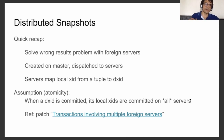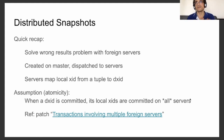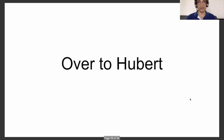To recap: distributed snapshots solve the problem of tuple visibility. The distributed transaction ID and snapshot are created on master and sent to servers along with each query statement. Foreign servers maintain a mapping between local and distributed transaction IDs for determining tuple visibility. This is based on the assumption of atomicity — when a distributed transaction ID is committed, all local transaction IDs that were part of this transaction are seen as committed by all involved foreign servers. There is currently a patch under discussion on pg-hackers proposing exactly this. With that, I hand it over to Hubert.